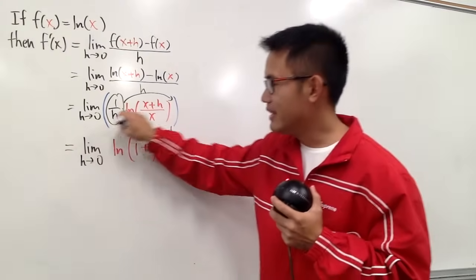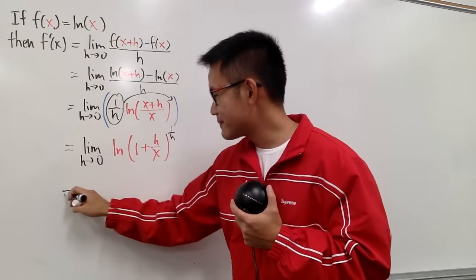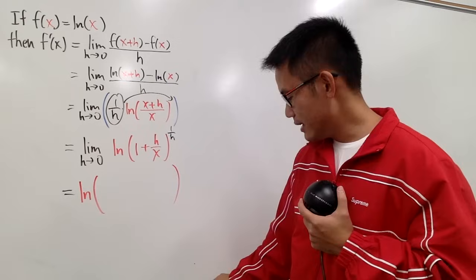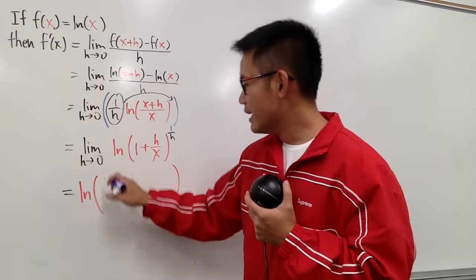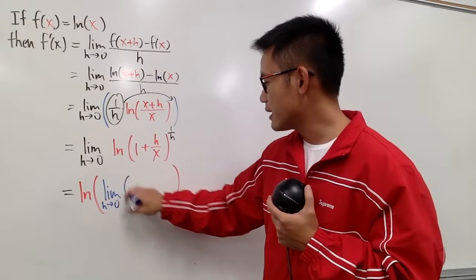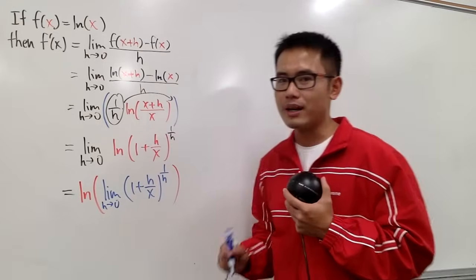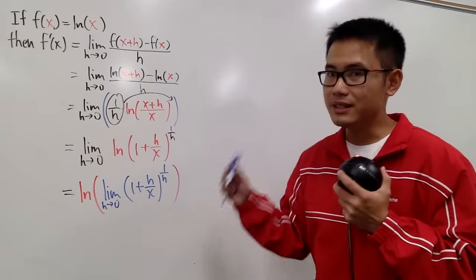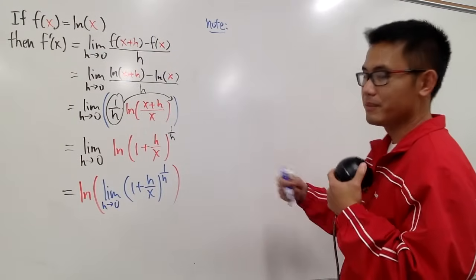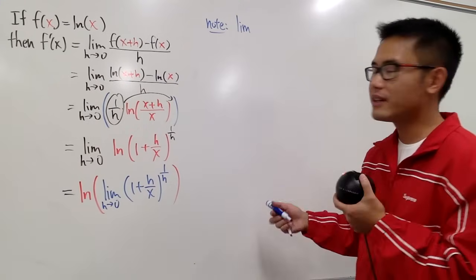So we can bring the limit inside the ln and just focus on the inner part. Let me write down the ln first, then work on the inside. We focus just on the limit as h→0 of (1+h/x)^(1/h). On the side, let's write down the definition of e — I'll use t instead of h.